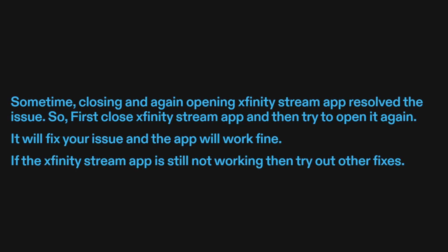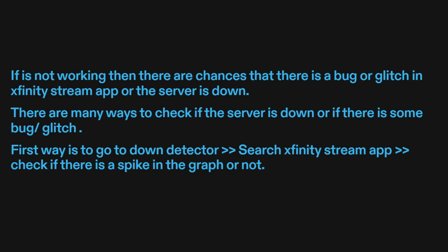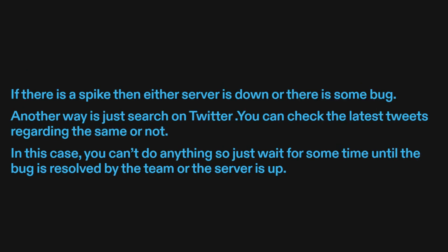If the Xfinity Stream app is still not working, then try out other fixes. Fix three: check if the server is down or not. There are chances that there is a bug or glitch in the Xfinity Stream app or the server is down. There are many ways to check — first, go to Down Detector, search Xfinity Stream app, and check if there is a spike in the graph. If there is a spike, then either the server is down or there is some bug.